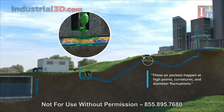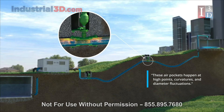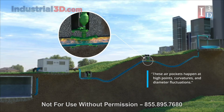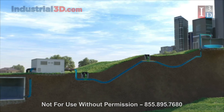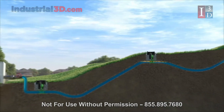Notice at the high point there is an accumulation of air and corrosive gases. Without an air valve, these pockets would create a reduction of flow, stress the pipe, and accelerate the corrosion process.